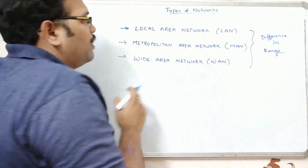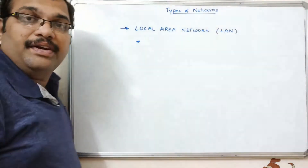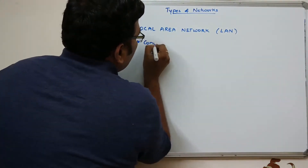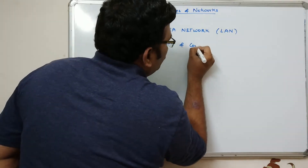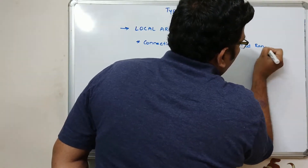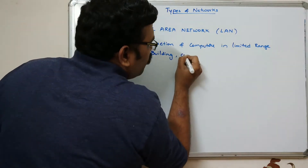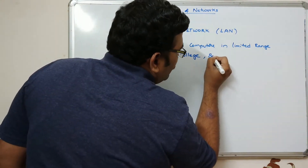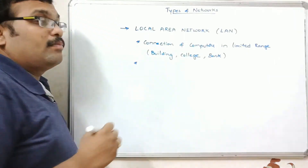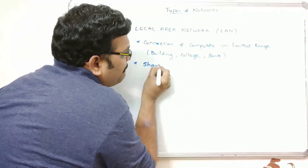First, let's look at Local Area Network. The name itself indicates that computers will be connected in a specified range — a connection of computers in a limited range, such as within a building, within a college, or within a bank. This is called the Local Area Network. The main purpose of a LAN is sharing resources.